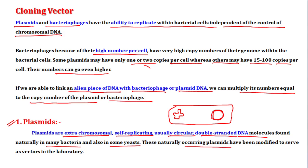These naturally occurring plasmids have been modified to be used as vectors in the lab. Because of their high copy number, they help multiply the inserted DNA within the host cell.